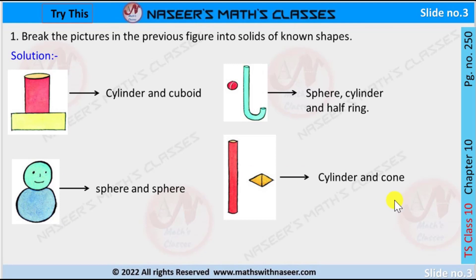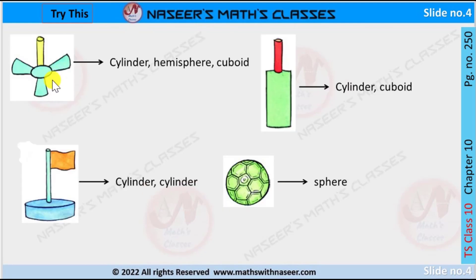And the fourth figure: one is cylinder and the other one is divided into two cones. This fan figure is divided into cylinder and hemisphere and three cuboids. Next, bat is divided into cylinder and cuboid.